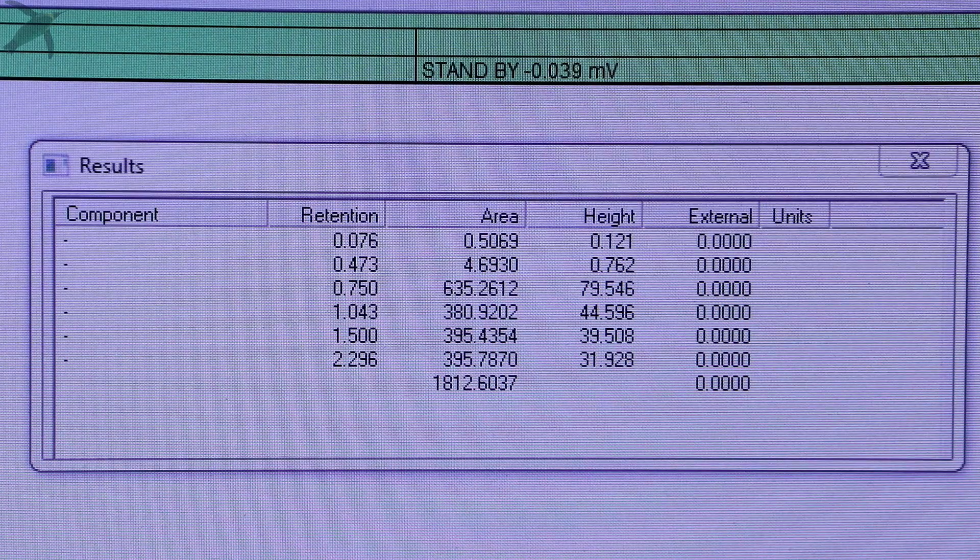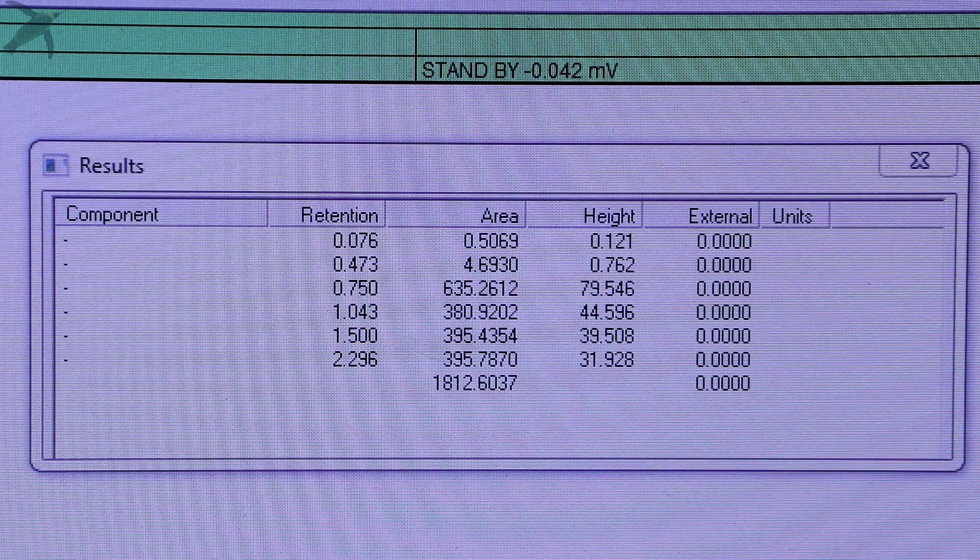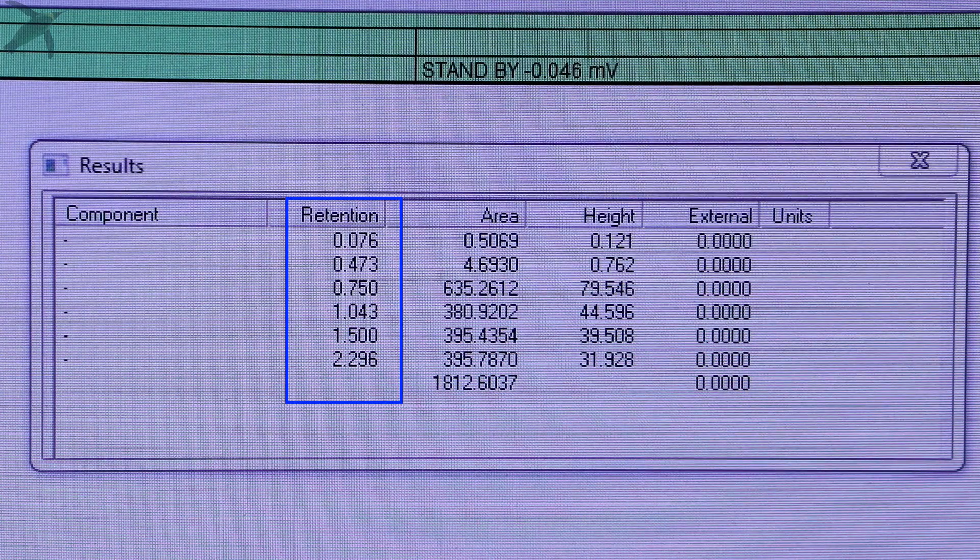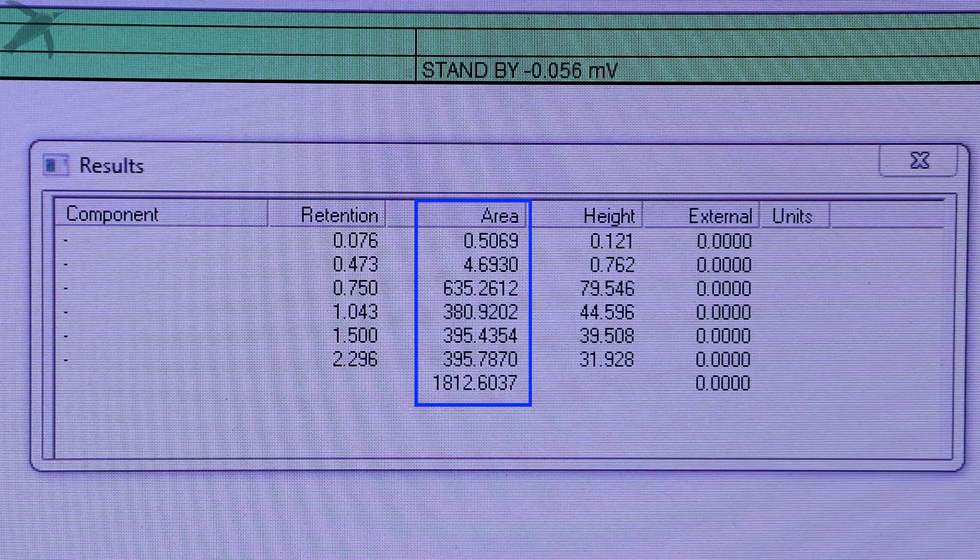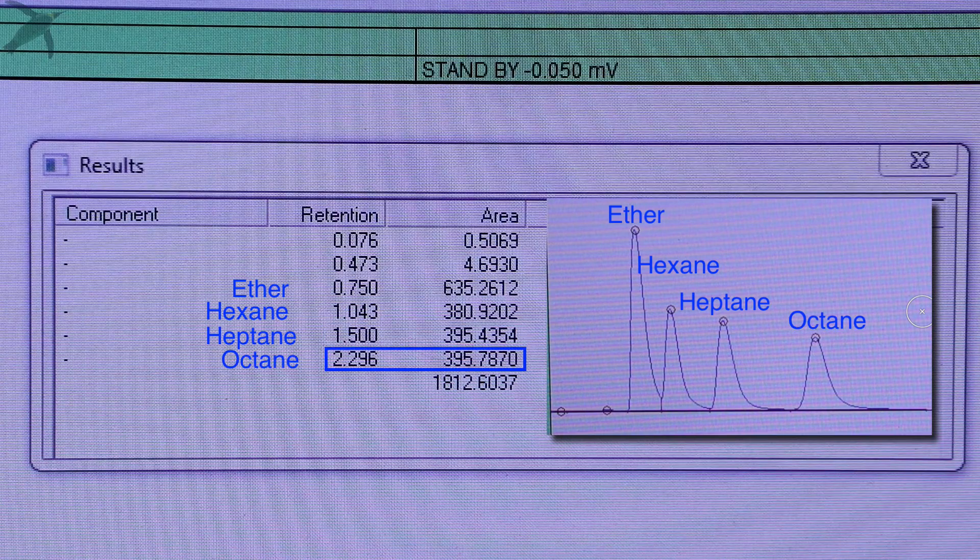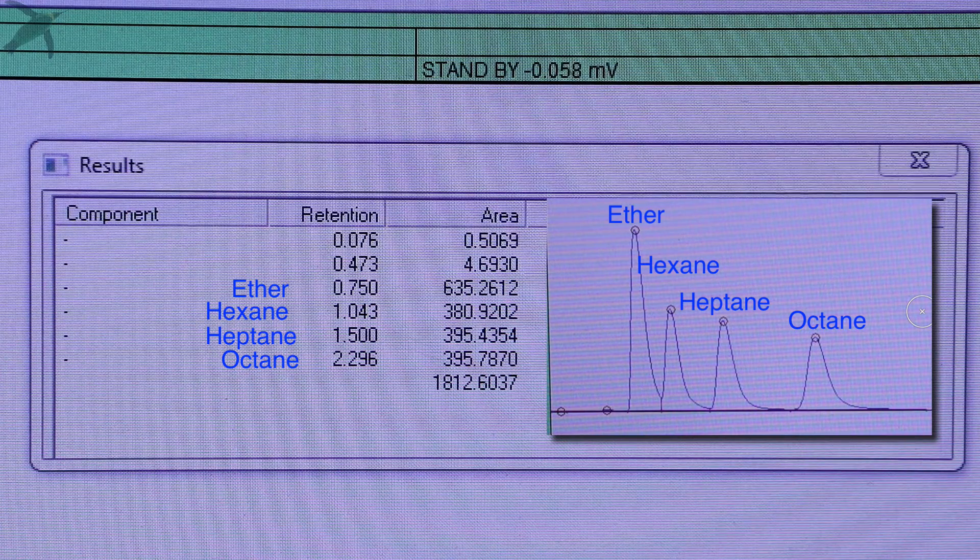If you look at your results window, there's a table that summarizes your analysis. You see that you have the two pieces of information that you most need: retention time and area. You will see four values, one for each peak. The first one is ether, then the second hexane, heptane, octane, and then you see the total area. Normally you want to ignore the ether peak because it's just the solvent we used to rinse the syringe.